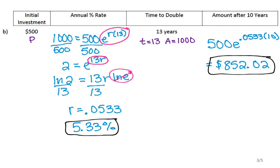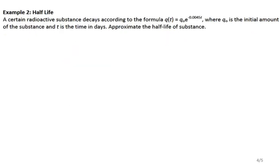Those are your two examples dealing with continuously compounded interest. The next thing we're going to look at is something called half-life. A certain radioactive substance decays according to a given formula, where q₀ is the initial amount of the substance and t is the time in days. We need to approximate the half-life of the substance.